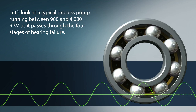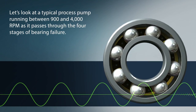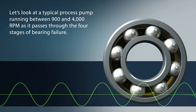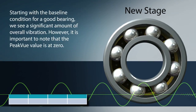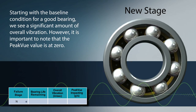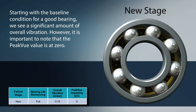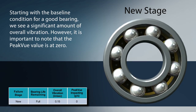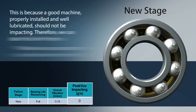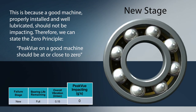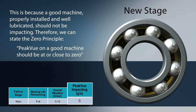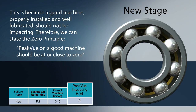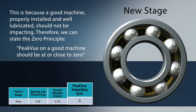Let's look at a typical process pump running between 900 and 4000 RPM as it passes through the four stages of bearing failure. Starting with the baseline condition for a good bearing, we see a significant amount of overall vibration. However, it is important to note that the peak view value is at zero. This is because a good machine, properly installed and well lubricated, should not be impacting. Therefore we can state the zero principle: peak view on a good machine should be at or close to zero.